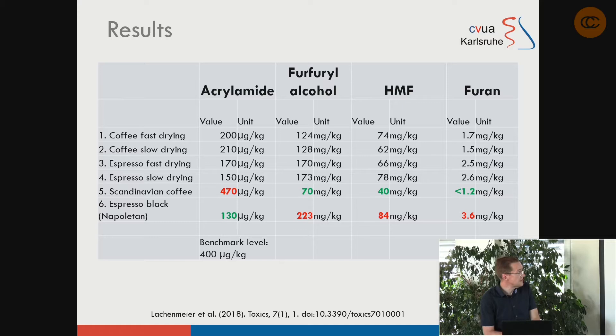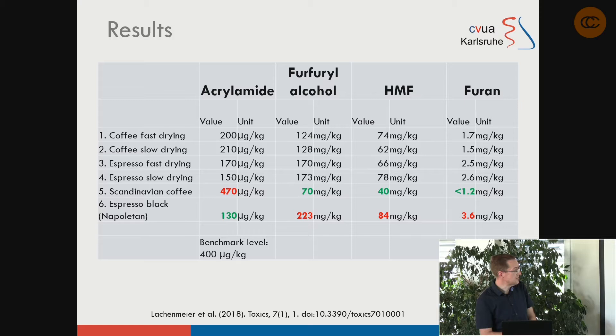For the very dark Neapolitan espresso, we have the highest level of furan — and this is milligrams, not micrograms, so much higher in concentration than acrylamide. For the light roast, furan was not detectable, below the limit of quantitation of our method. The coffee and espresso roasts are again in the middle between these extremes.